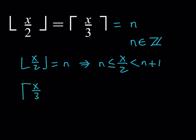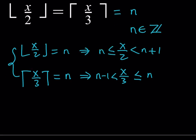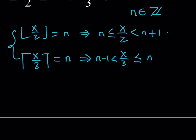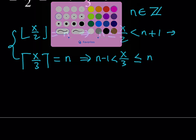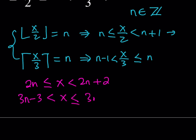With the ceiling function it's a little different: you put n minus 1 on the lower side with no equality, and n on the upper side with equality — because if a number is an integer, its floor and ceiling values are the same number. Now, to isolate x in both inequalities, multiply the first through by 2, giving 2n ≤ x < 2n plus 2. Multiply the second through by 3, giving 3n minus 3 < x ≤ 3n.